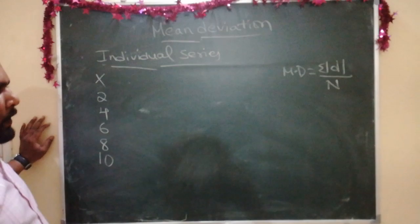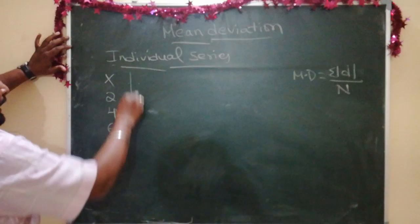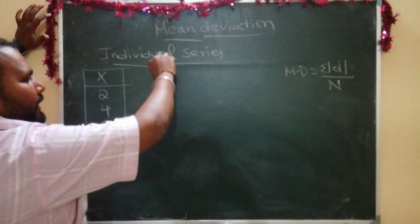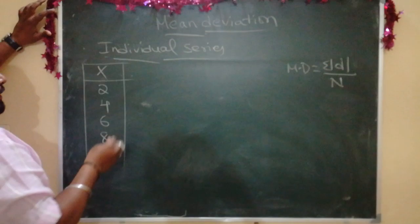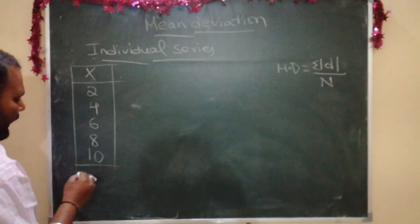While finding mean deviation, basically, first we have to find arithmetic mean. Mean deviation can be found under two methods: one, finding mean deviation by actual mean, and finding mean deviation by median. We will go now with finding mean deviation through actual mean.